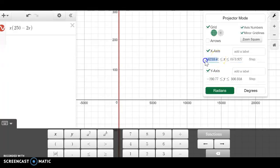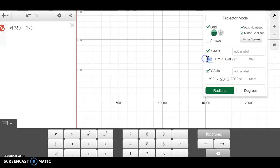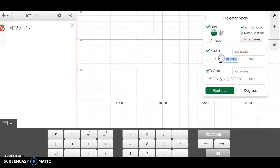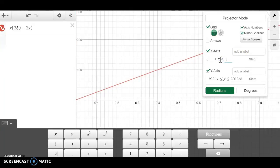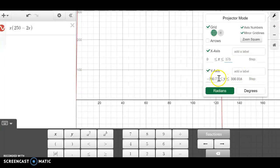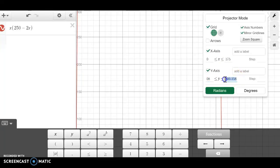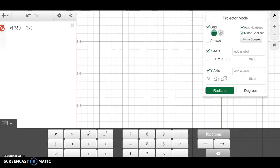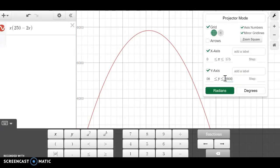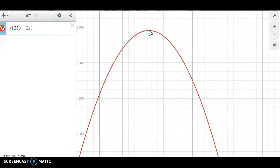So I'm going to put the x values going from 0 to 175, and then the y values from 0 to 9,000 because I know that the area was past 7,000. So there we go. Now I see a pretty parabola and I can find its maximum.